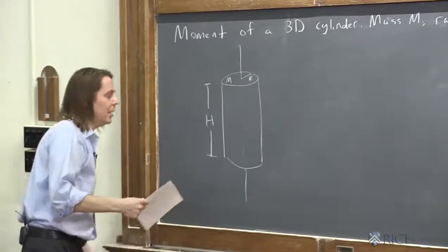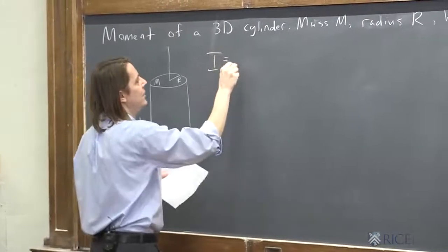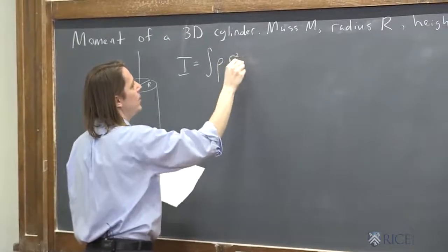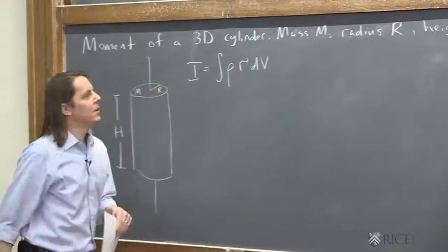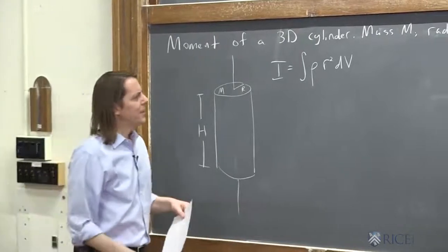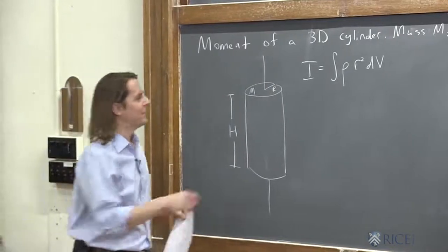So now we're going to use the full volume formula. The moment is the integral of the density times R squared times dV. So we just got to decide how we're going to treat the volume element. We're going to do cylindrical coordinates and we're going to do the shortcut from last time.